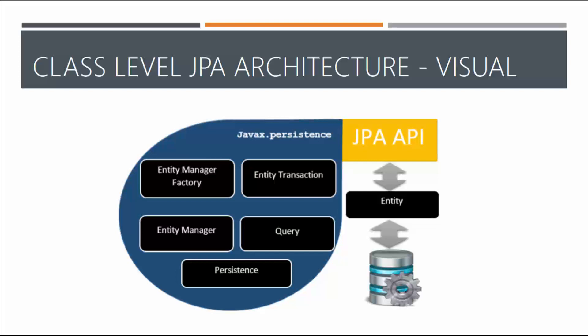Here's a visual representation of the class-level JPA architecture. The JPA essentially acts as the bridge between the database, using Entity Manager Factory, Transaction, Query, Persistence, and Entity Manager — all under the javax.persistence module. We'll look at how we import and integrate JPA within Hibernate once we get into Java code development. Practice and learn more about JPA — it's a buzzword you need to know, understanding what it means, how it functions, and why we use it. Hope this helps — let's move to the next lesson.